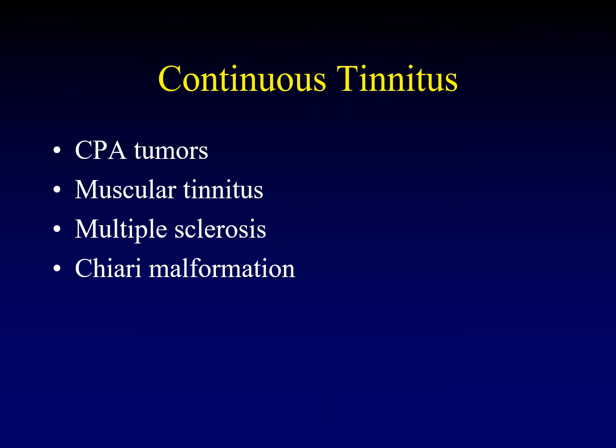Now let's briefly discuss continuous tinnitus. Cerebellopontine angle tumors can cause it — covered in the previous part of the lecture. Multiple sclerosis, particularly involving the brainstem, and Chiari malformation can also cause continuous tinnitus. There is also muscular tinnitus, where the suspensory muscles of the ossicles start to twitch and pull on the ossicles improperly, causing continuous tinnitus — this has no radiologic manifestations.